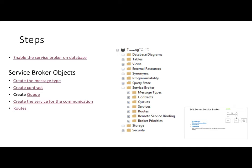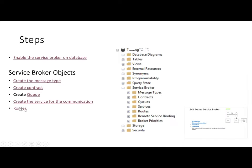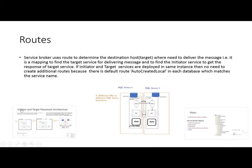After creating the service, or service-oriented application, on the hosting database, there is another object known as routes. Routes is an optional object. Routes are used to determine the address of the target database for delivering the message. If the initiator wants to send a message to the target, it will go to the routes to check the address for the hosting target — where the target is hosted.